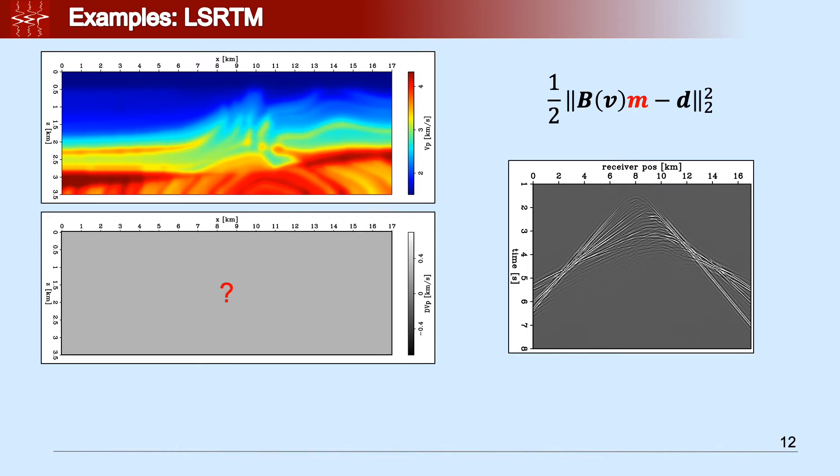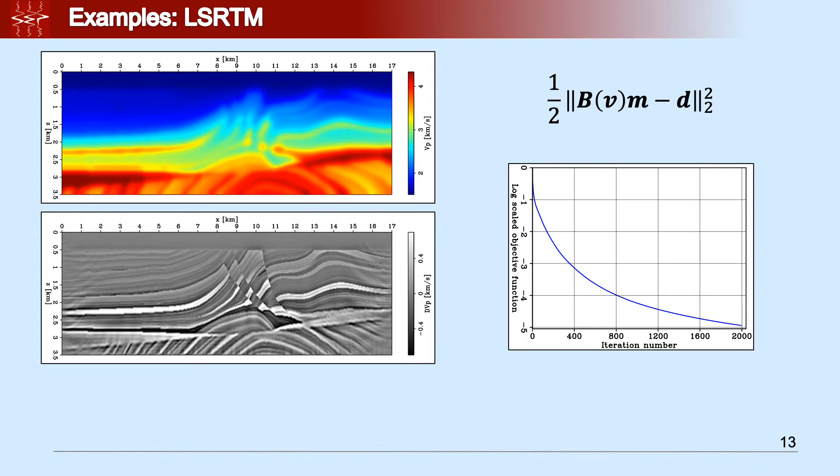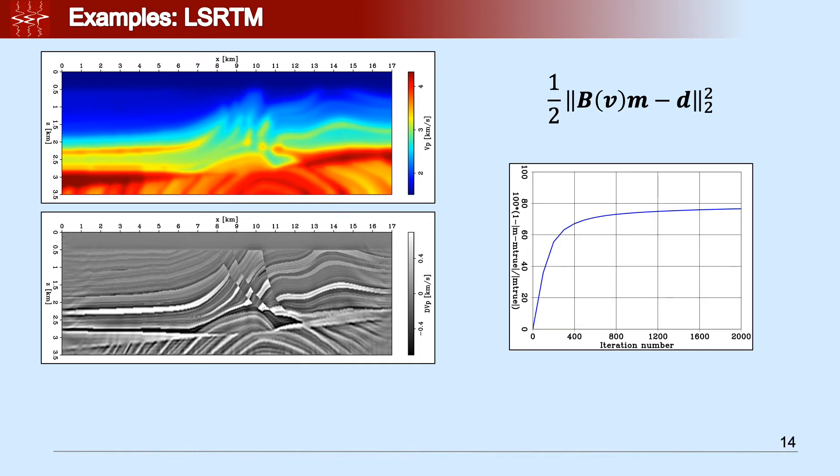Now that we have our data and our Born modeling operator, we can actually minimize, pose the inverse problem, and minimize it using a conjugate gradient. We ran the conjugate gradient for 2,000 iterations and we can see that we retrieve a pretty good reflectivity. If we compute some kind of model matching, as you can see here on the right, we matched almost 80% of the true reflectivity.